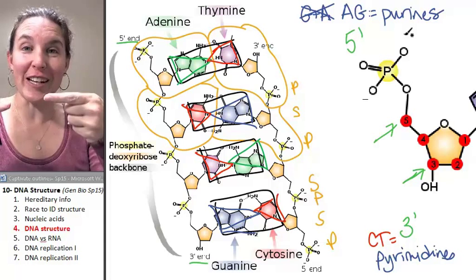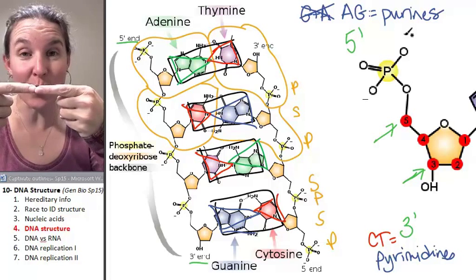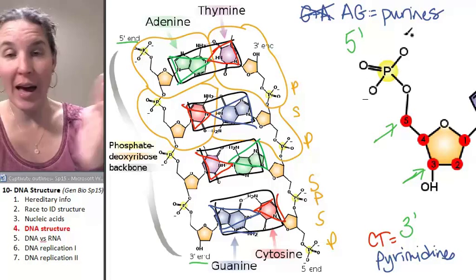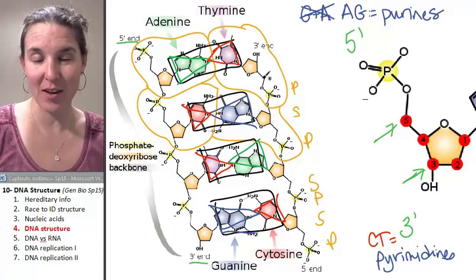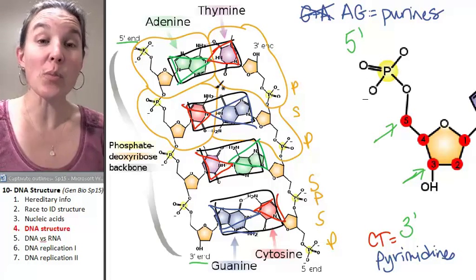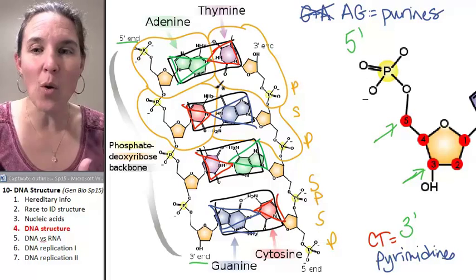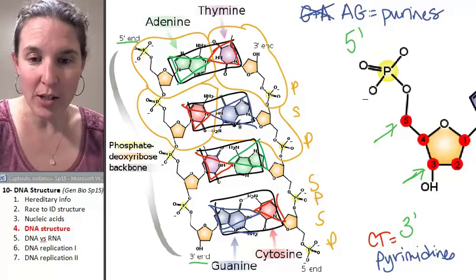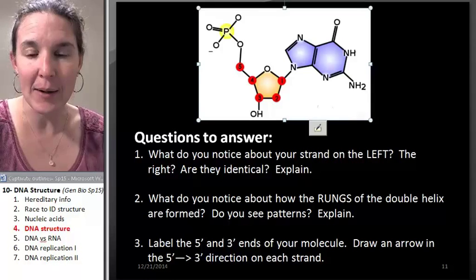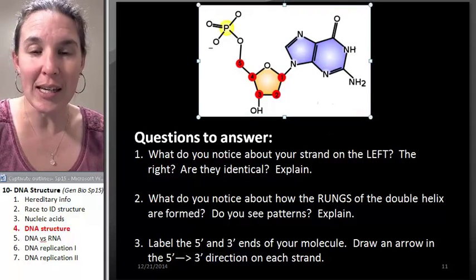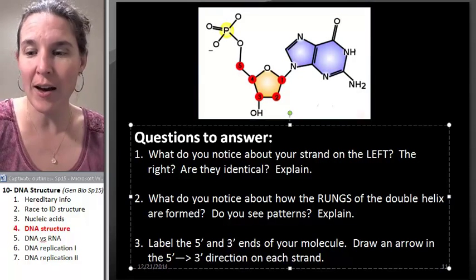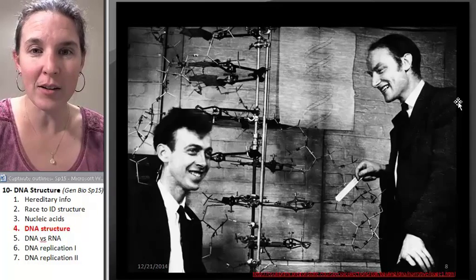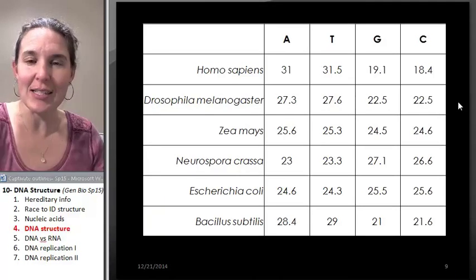A purine must bind with a pyrimidine; otherwise, the rungs of your ladder are not going to match up. And that's one of the rules — in fact, that was Chargaff's research. Let's go back and find it and see what he noticed.